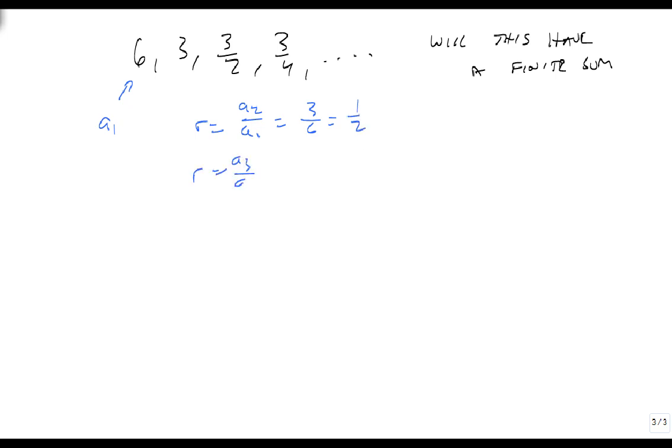Notice it also has to be a3 divided by a2, which is 3 halves divided by 3, which is 3 halves times 1 third, which sure enough is 1 half. And since these are both 1 half, and the absolute value of 1 half is less than 1, this will have a finite sum.